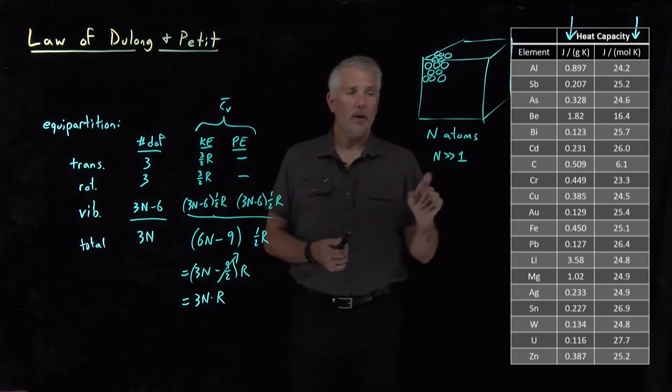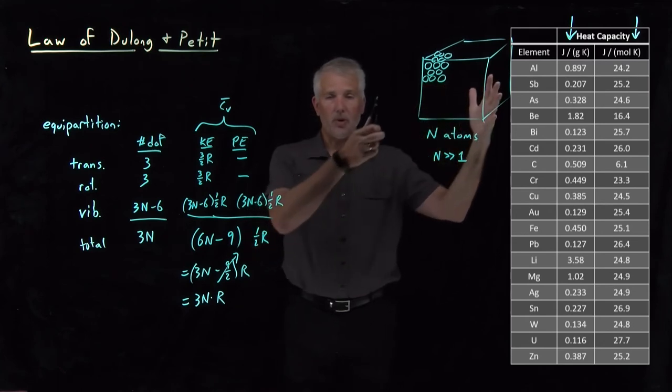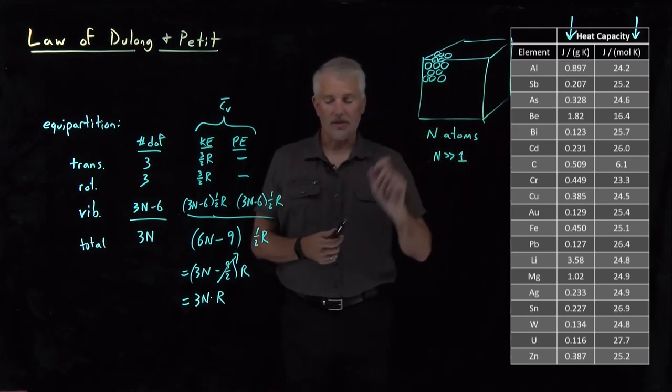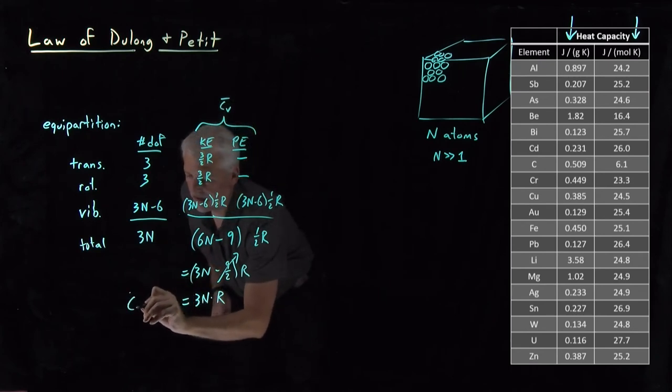So we want to recalculate the heat capacity in joules per mole of atoms rather than joules per mole of molecules or blocks of metal. So this would be the heat capacity of this macroscopic sample,